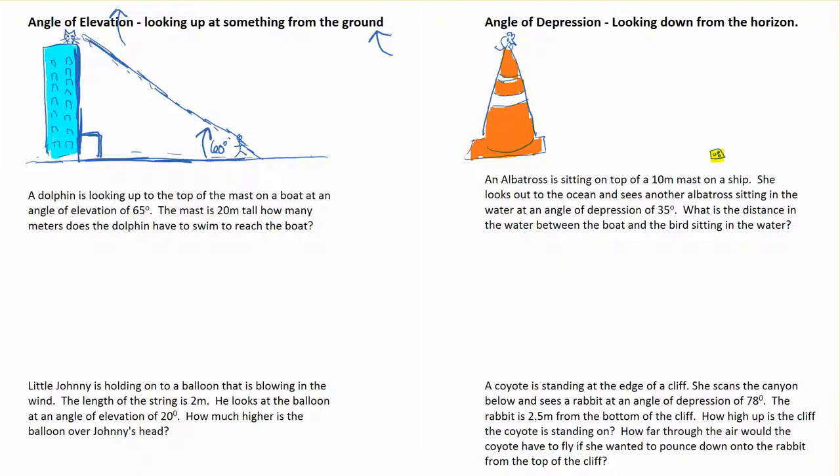Now angle of depression - if you want to think about depression by maybe thinking about being down about something - angle of depression is measuring down. You're looking down from the horizon.